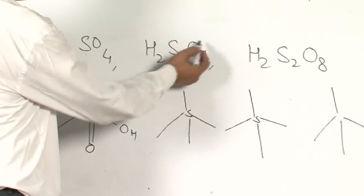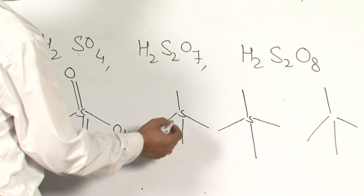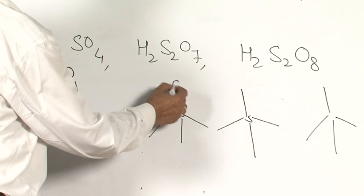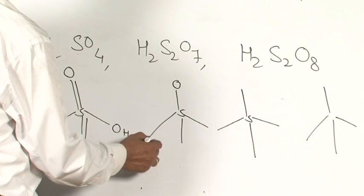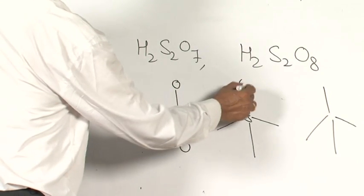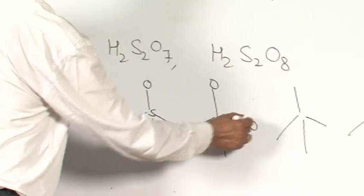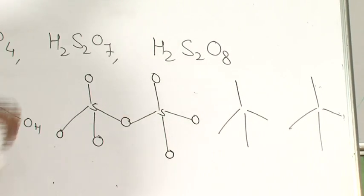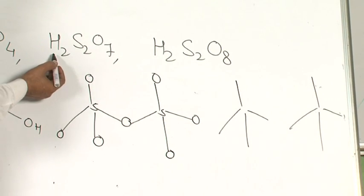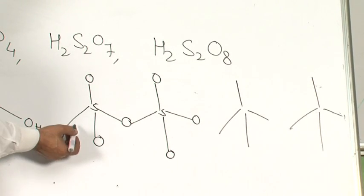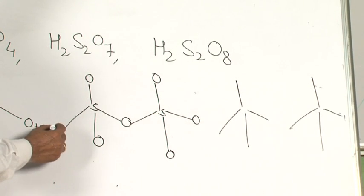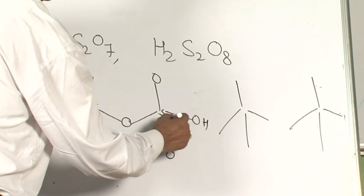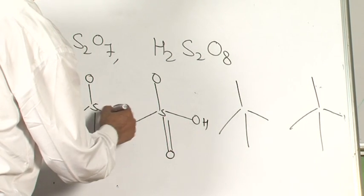In the case of H2S2O7: S and S, 7 oxygen — 1 will be common, shared between the two sulfur tetrahedra. There are 2 hydrogen: one with this sulfur and another with this sulfur — H and H — and remaining bonds will be double bonded.